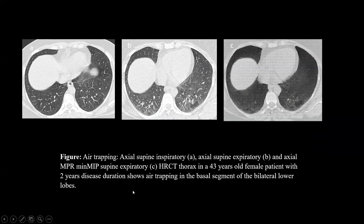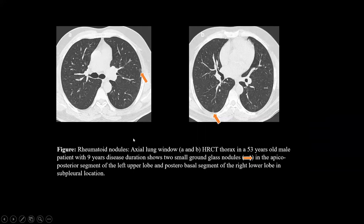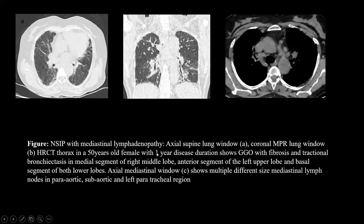A 43-year-old female patient with 2 years of disease duration shows air trapping in the basal segments of bilateral lower lobes. Another 43-year-old female with 9 years of disease duration shows small subcpleural ground glass nodules in the apicoposterior segment of the left upper lobe and posterobasal segment of the right lower lobe. A CT Thorax of a 50-year-old female with severe disease shows GGO and fibrosis with tractional bronchiectasis in both lower lobes, with mediastinal lymph nodes in the paraaortic and left paratracheal region — consistent with NSIP with mediastinal lymphadenopathy.